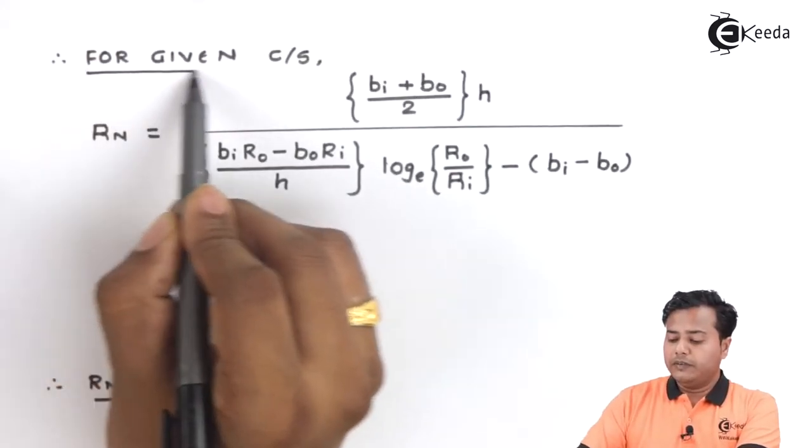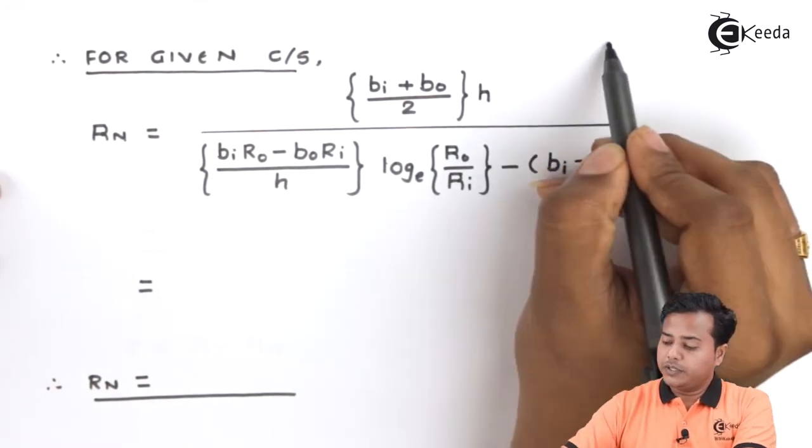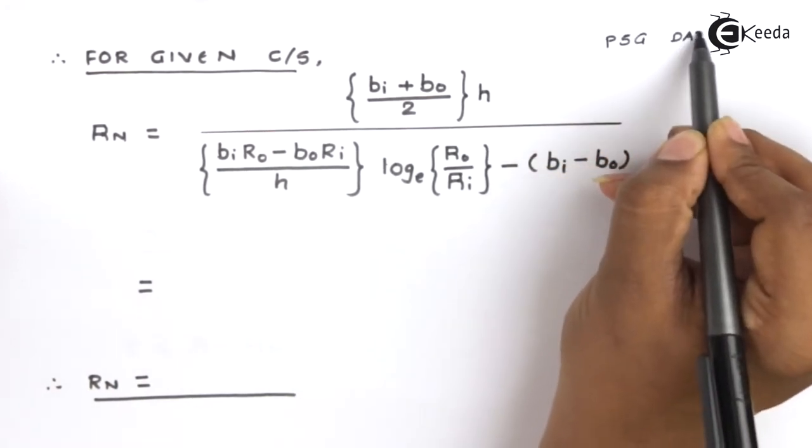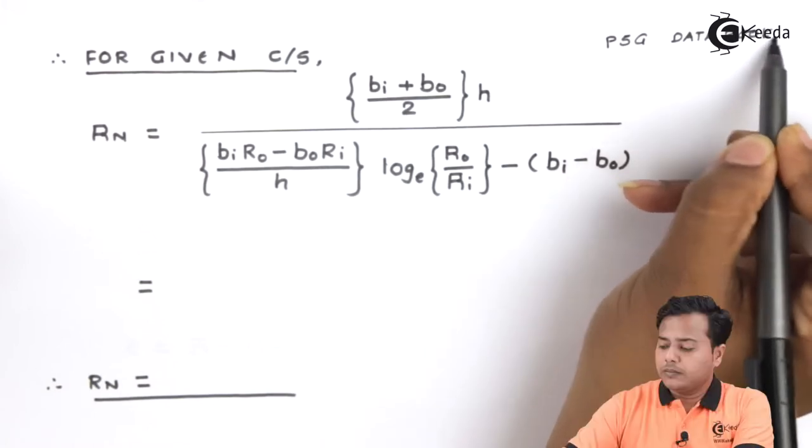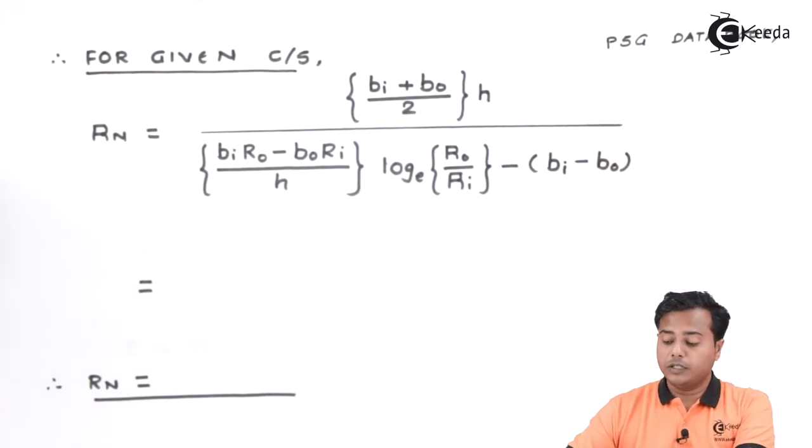So, for the given cross section, you can always refer to the PHD data book. Using the PHD data book, you can obtain that for the radius neutral,